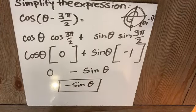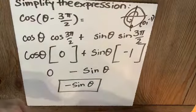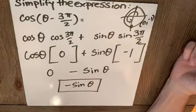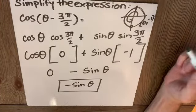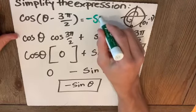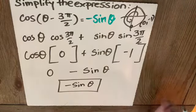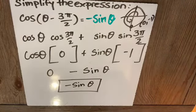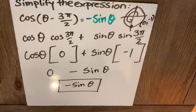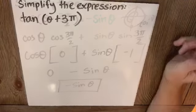Notice if this were a proof, I would say to you, prove that cosine of θ minus 3π/2 is equal to negative sine θ. That would have been the original problem. That's why I say simplifying is similar to doing a proof, except they don't really tell you where you're heading.